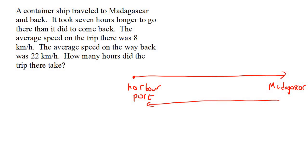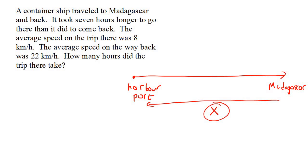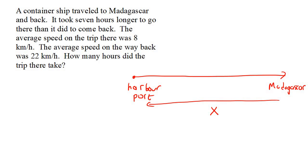It says that it took seven hours longer to go there than it did to come back, but we don't even know how long it took to come back. So let's say when it came back, let's call that x. Now think about this carefully — if the return time is x, then what would the trip there be? Don't say 7x. If this was three hours, you would say three plus seven, not three times seven. So if this one's x, then this one must just be x plus seven, just like we said three plus seven.